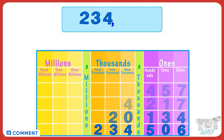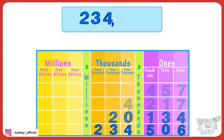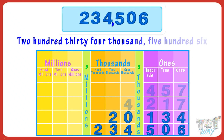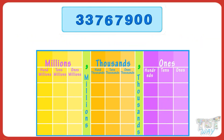Now the next three numbers are in the ones period. Read them according to the place values: five hundred and six. So we rewrite this number and read it as two hundred thirty four thousand five hundred and six.